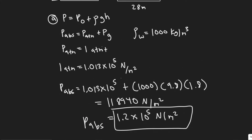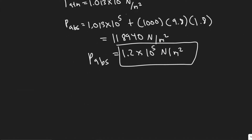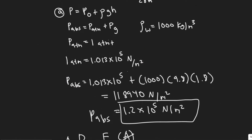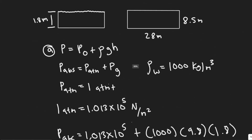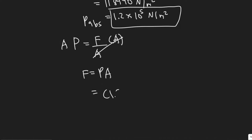They also want us to find the total force at the bottom. We use the formula: pressure equals force over area, so force equals pressure times area. We're looking at the bottom of the swimming pool, and we know the pressure at the bottom is the absolute pressure we just solved for. I'll use the more exact value: 1.189 times 10 to the 5.